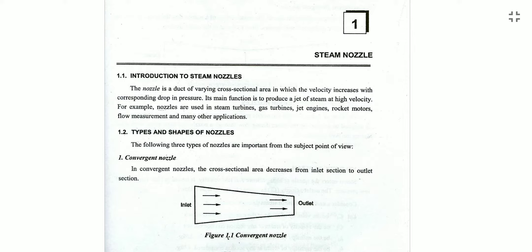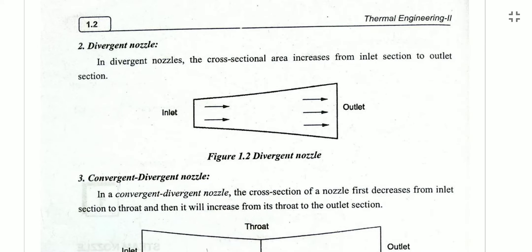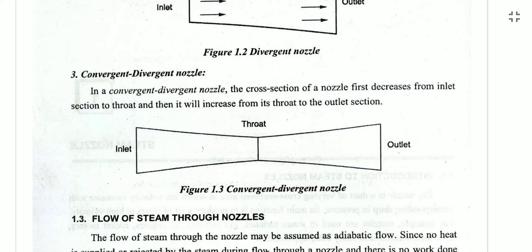There are three types of nozzles: convergent, divergent, and convergent-divergent. A convergent nozzle has a higher inlet area converging to a reduced cross-sectional area at the outlet. A convergent-divergent nozzle has two sections — first a convergent section, then a divergent section. The connection point is the throat, which has the smallest cross-sectional area. It has inlet, throat, and outlet sections.